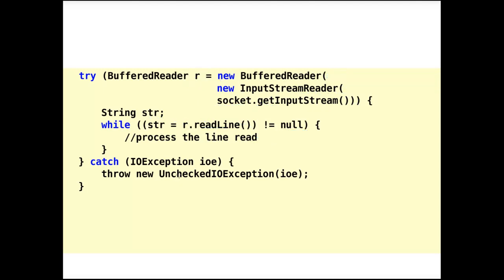Another interesting thing with this program is the catch block. Many of the stream methods and constructors throw IOException, which is a checked exception, meaning you have to catch it in catch blocks or declare it to be thrown. Sometimes one might get tired of that, since there's often nothing to do — if we get an IOException, the program is doomed anyway. To facilitate programming, we can wrap the IOException in an unchecked UncheckedIOException. Being unchecked, we don't have to declare it in throws or catch blocks in any other methods in the call chain.